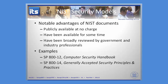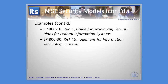What we're going to do now is look at four examples. You have SP800-12, which is a computer security handbook. SP800-14, Generally Accepted Security Principles and Practices. 800-18, Revision 1, Guidelines for Developing Security Plans for Federal Information Systems. And then 800-30, which is Risk Management. So let's look at those four publications and see what we find.